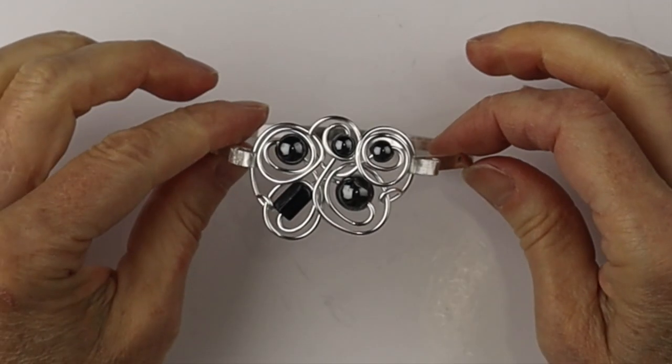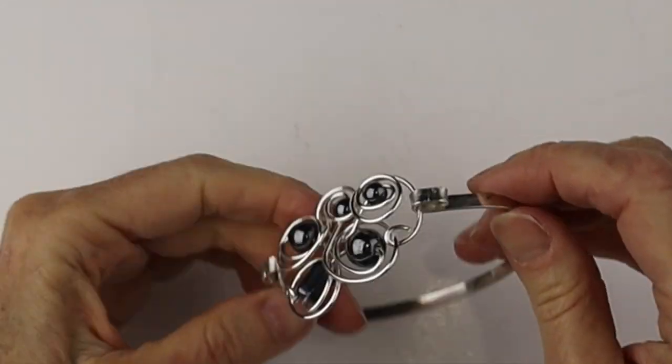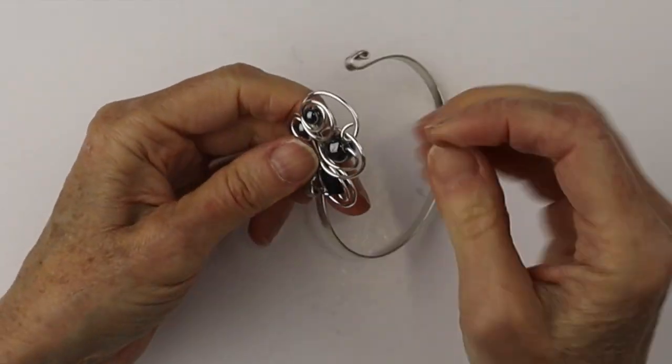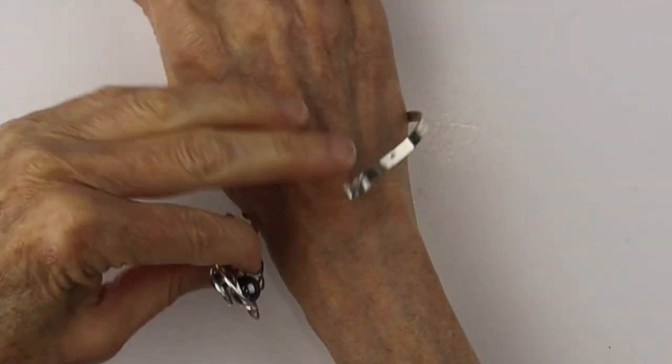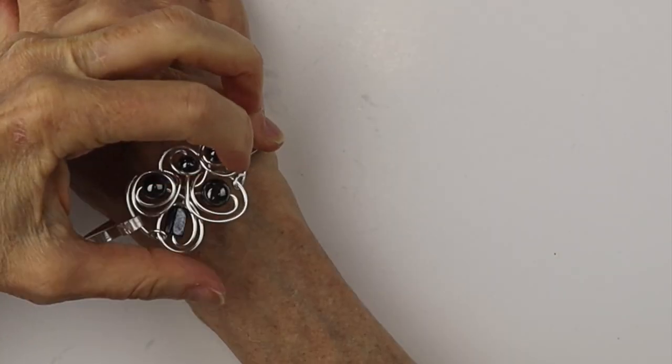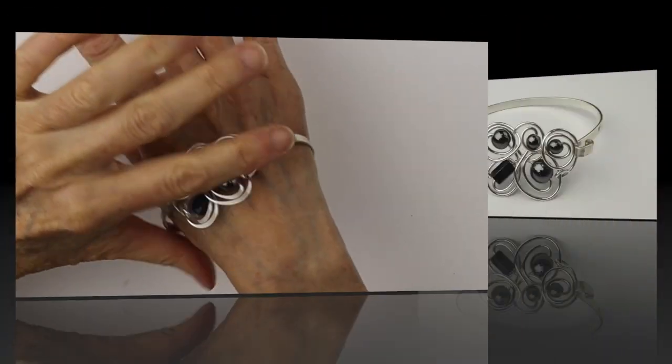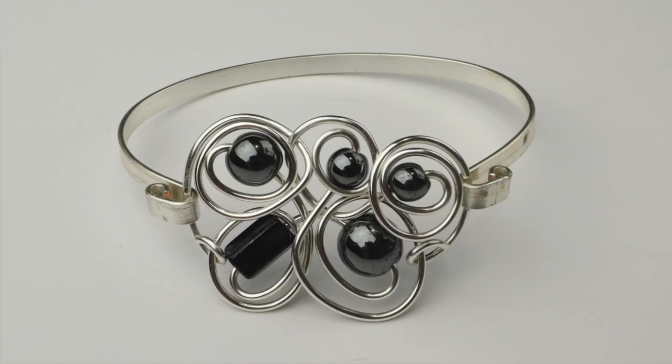And it just hooks right in there, easy to open and close. You can just put it on your wrist. I made it a little big. I have really tiny wrists. So there is our flat wire funky bracelet.